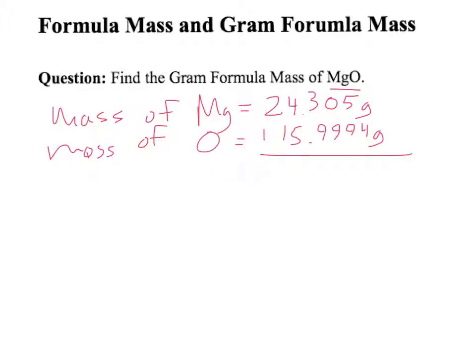Now when I do the math and add those together, I end up with 40.3044 grams. And that, the sum of the masses of my magnesium and oxygen, is going to equal my gram formula mass, or GFM.